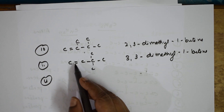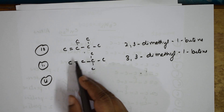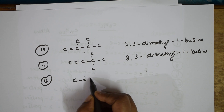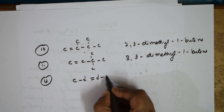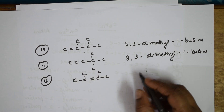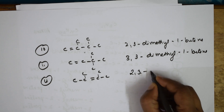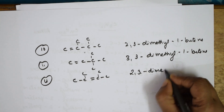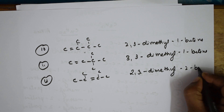Last one — twelfth isomer. I'm going to shift the double bond to the second position and place both methyl groups. This becomes 2,3-dimethyl-2-butene.